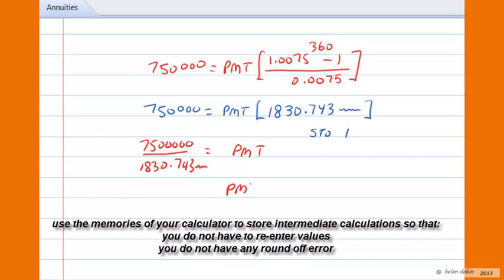So the payment size that's required for this annuity works out to be $409.67 per month. It's important to note how often the payments are made. Now we can round off, now that we have our final answer, we can round it off to the nearest penny. So a monthly deposit of $409.67 will accumulate to $750,000 after 30 years if it earns interest at 9% compounded monthly.